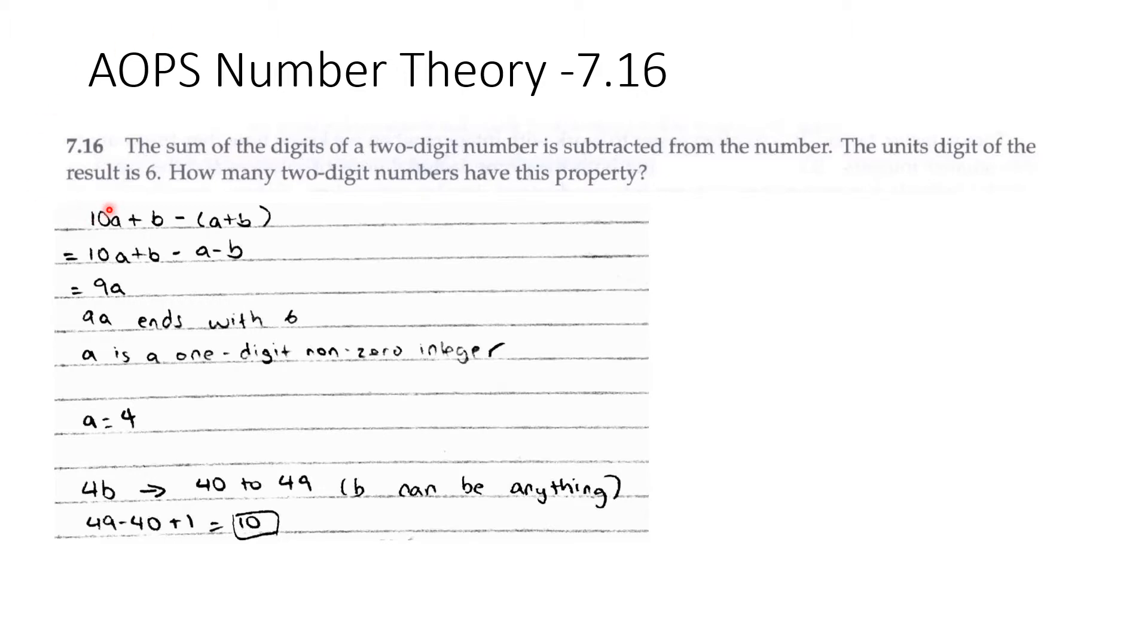So if the two-digit number is 10a plus b, where a is the tens digit and b is the ones digit, the sum of its digits is subtracted from that number.